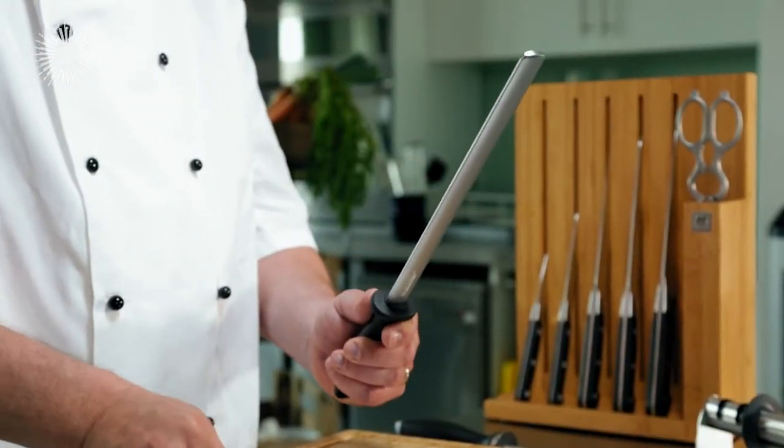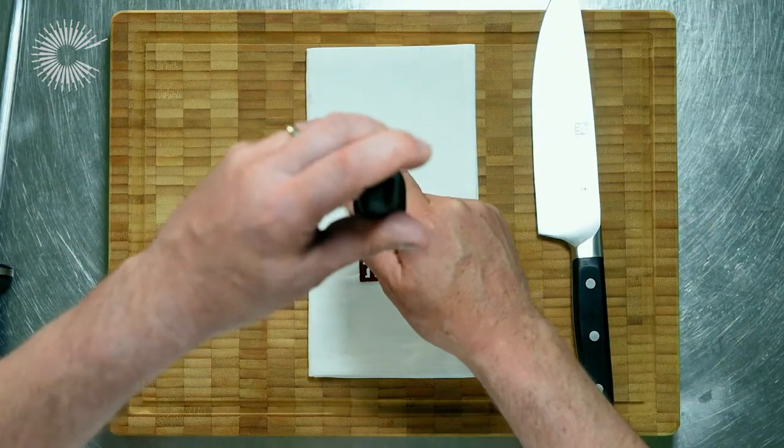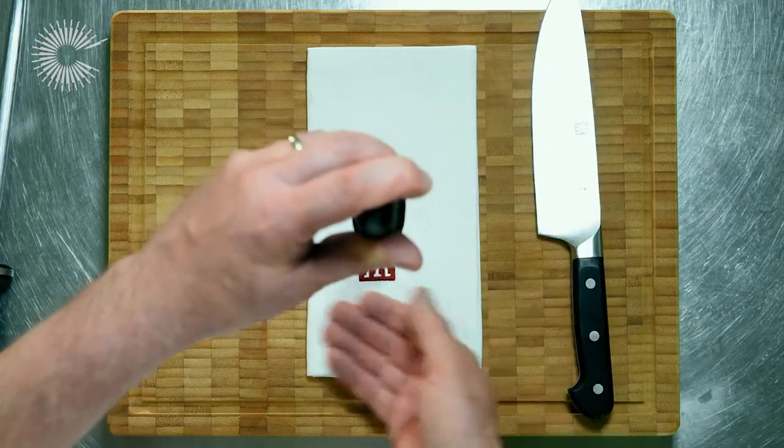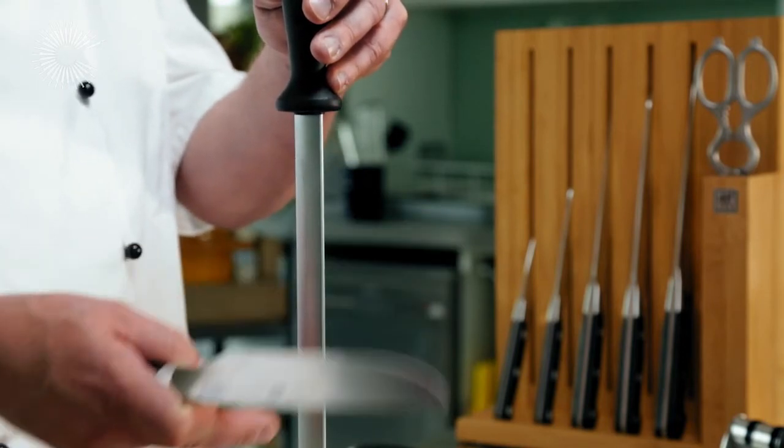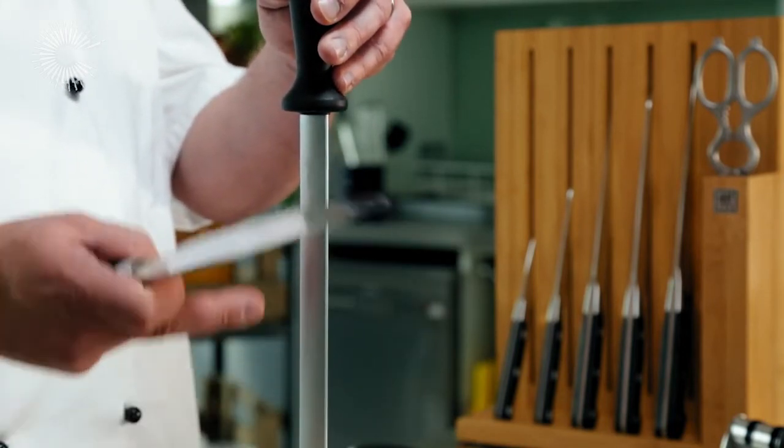To use your steel correctly, bring your steel pointing down onto the board with a cloth here being used so my steel doesn't slip around. For sharpening a knife using a diamond steel, we're looking to come onto the steel at 20 degrees.